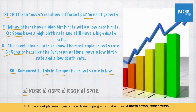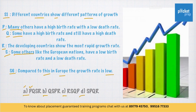Now let's scan the options. Let's try Option A first: P, Q, S, R. After statement 1 — 'Different countries show different patterns of growth' — if P comes first, it would be 'many others have a high birth rate with a low death rate.' As soon as statement 1 is completed, statement P doesn't become meaningful. So Option A is wrong.